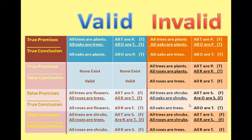You must look at the relationship of the terms within the premises to determine whether the structure is valid or not. There are two means to determine validity, studied in later chapters. The first is a visual means called Venn diagrams, where the two premises are diagrammed and the conclusion is checked to see if it is contained visually in the premises. The second method is a method of rules — a quality control — where each valid argument must pass a set of rules. If one single rule is broken, the structure is invalid. It is important to know that the truth value of statements cannot tell you whether or not an argument is valid or invalid.